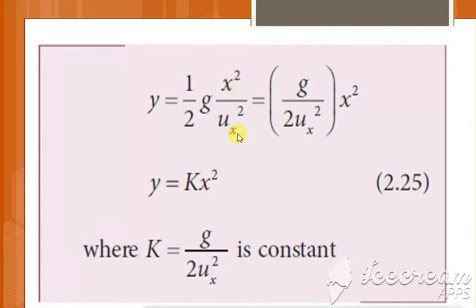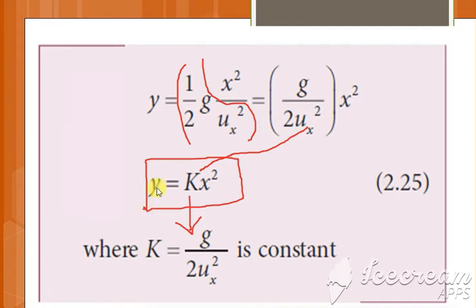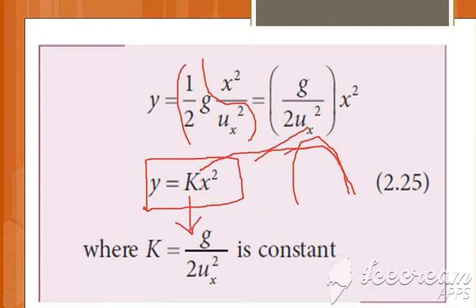We combine the constants ½, g, and uₓ² into a single constant k, giving y = kx². This is the equation of a parabola. So any object thrown in any direction moves in the shape of a parabola. This confirms the trajectory of a projectile is parabolic.